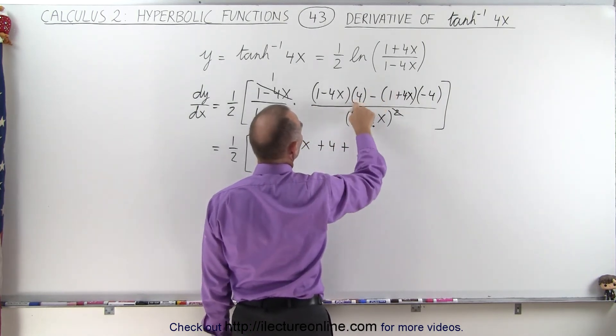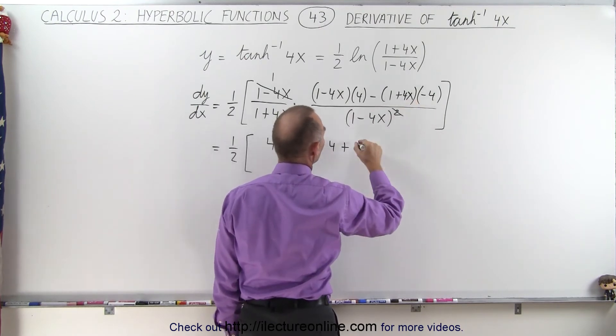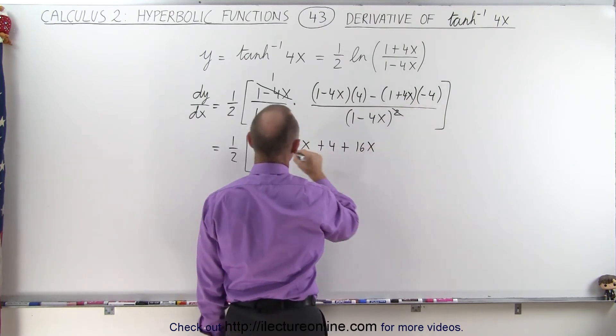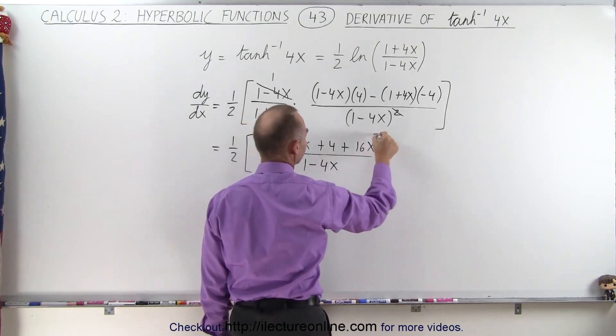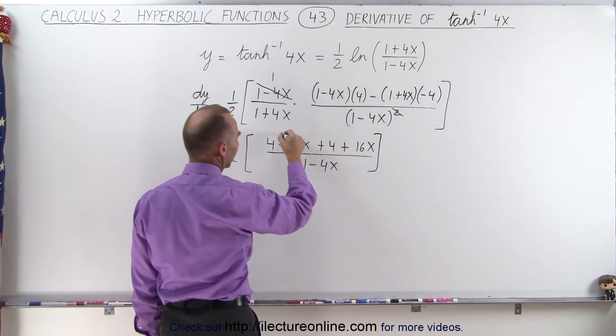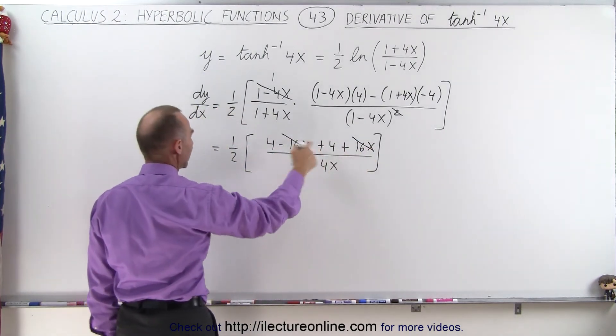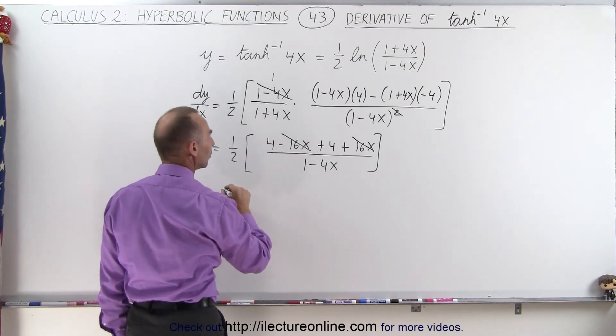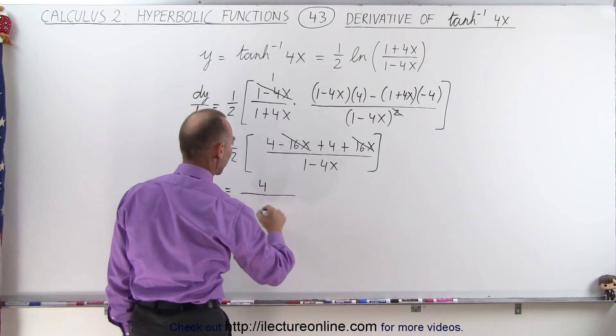So we have the denominator times the numerator minus the numerator. Yes, I forgot an x there. So this would be plus 16x, all divided by 1 minus 4x. And here we have a minus 16x and a plus 16x. So this cancels out that. And 4 plus 4 is 8. So 8 times 1 half is 4. So this becomes equal to 4 divided by 1 minus 4x.